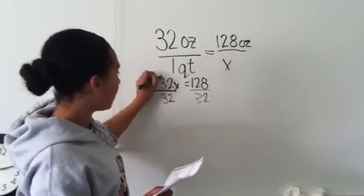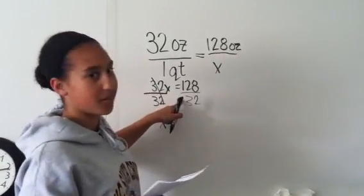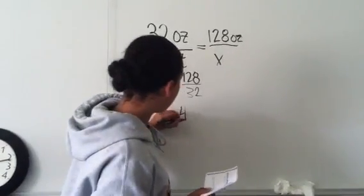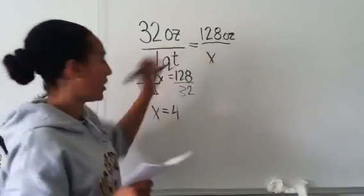32 divided by 32 cancels out, so you're going to put X on this side, and 128 divided by 32 equals 4. So that means there are four quarts in 128 ounces.